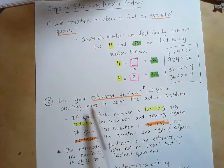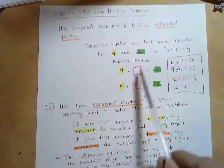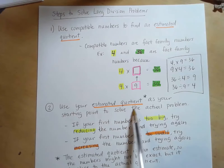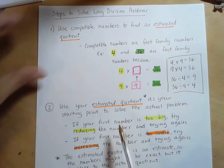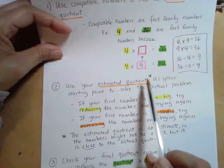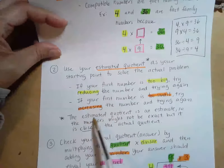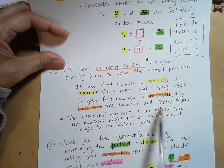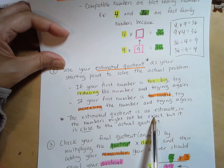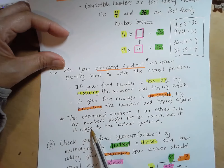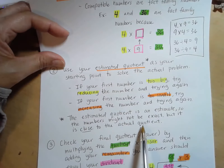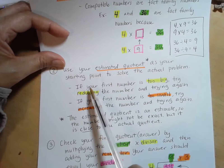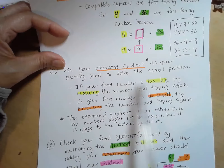I'm going to go on to the second part. Once you find an estimated quotient, that is going to be your starting point to solve the actual problem. This estimated quotient — I have a little asterisk here — because the estimated quotient is exactly that: it's an estimate. The numbers might not be exact, but it is close to the actual quotient that you will get. This is just your starting point. I'll go back here and talk about if your number is too big or too small.